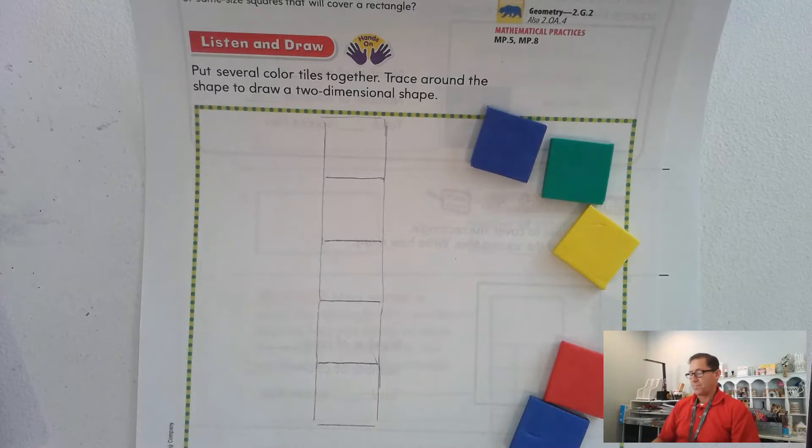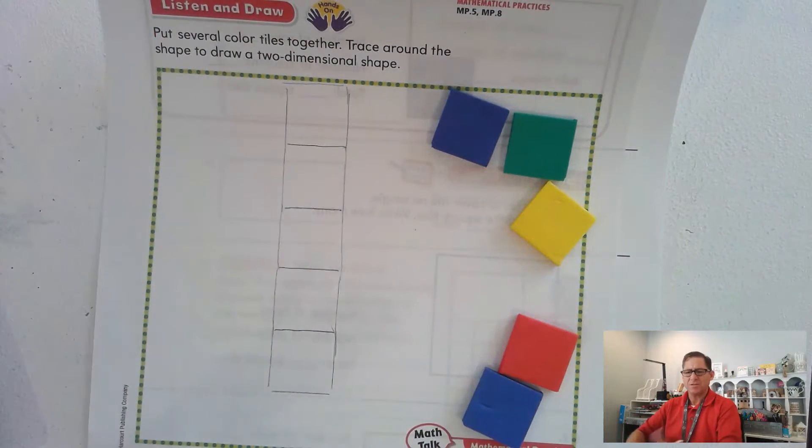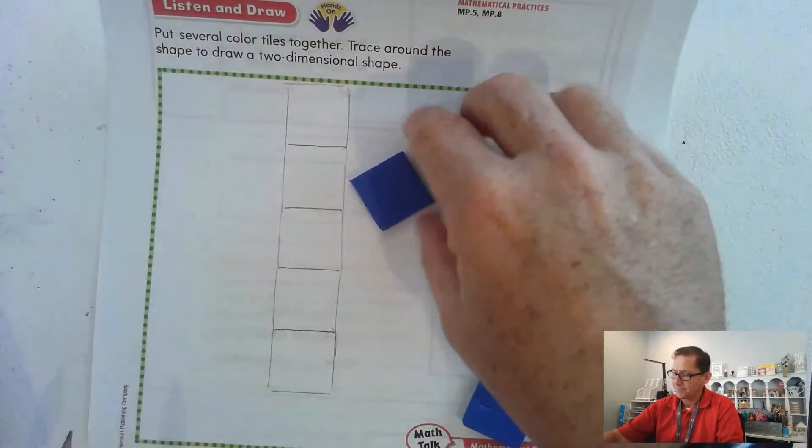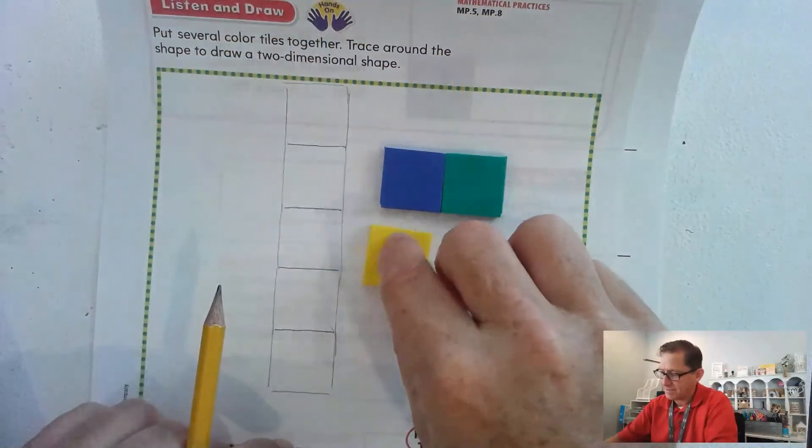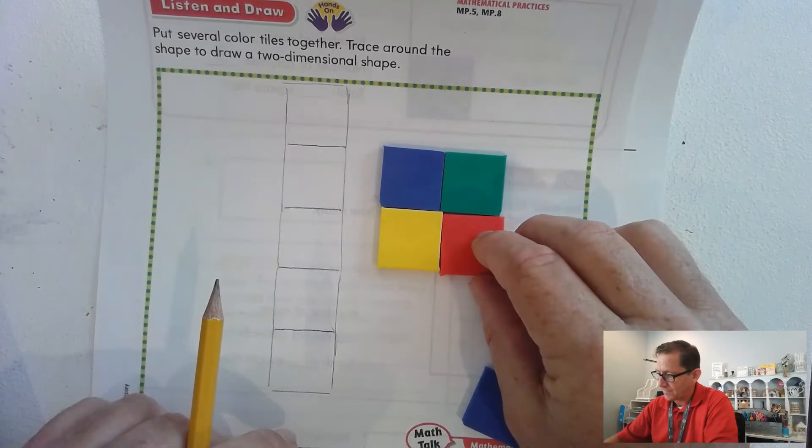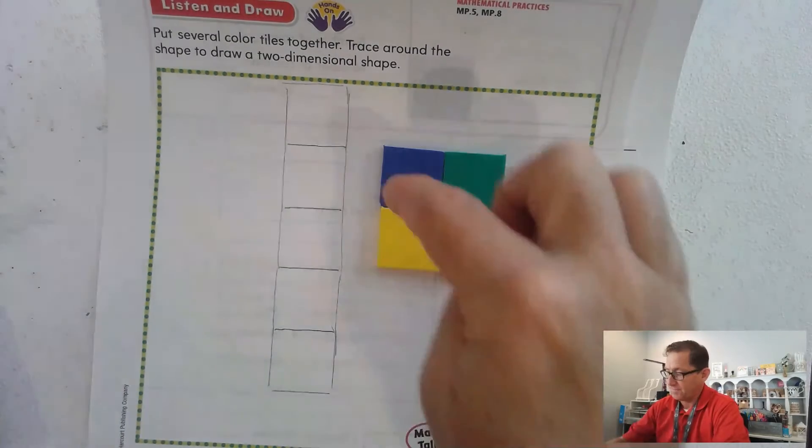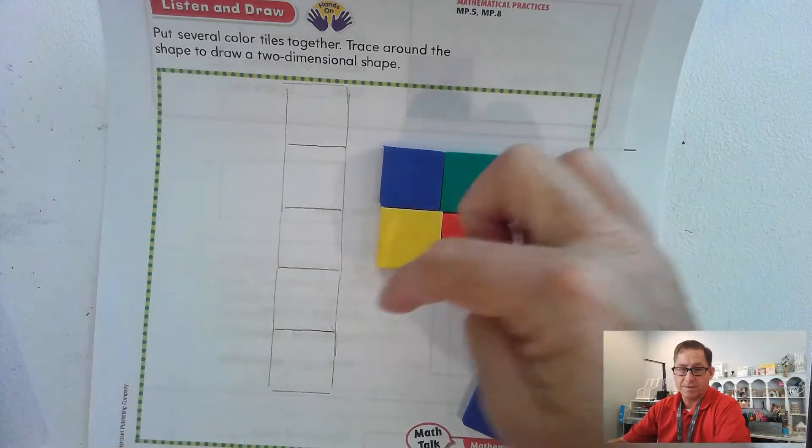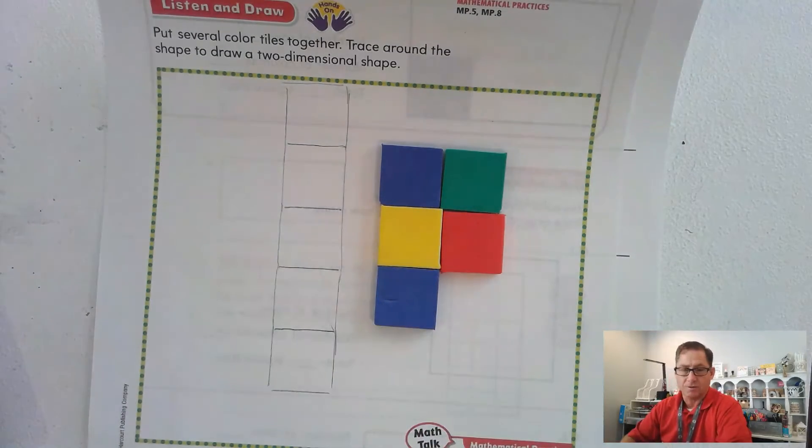Now let me ask you a question. Using those same tiles that you have to make this shape, could you make a square out of your tiles? Let's see. So I know a square has the same length sides on all four sides. So like that, that would be a square, right? We have two rows of two. But when I add my fifth one, I no longer have a square.